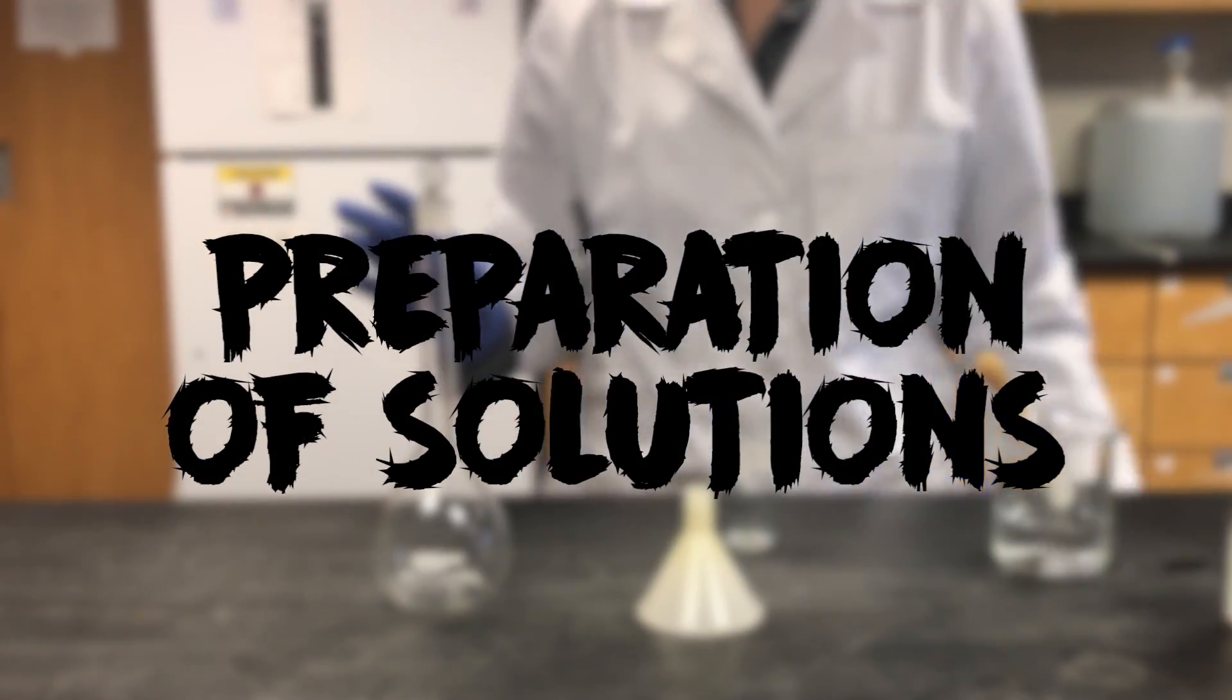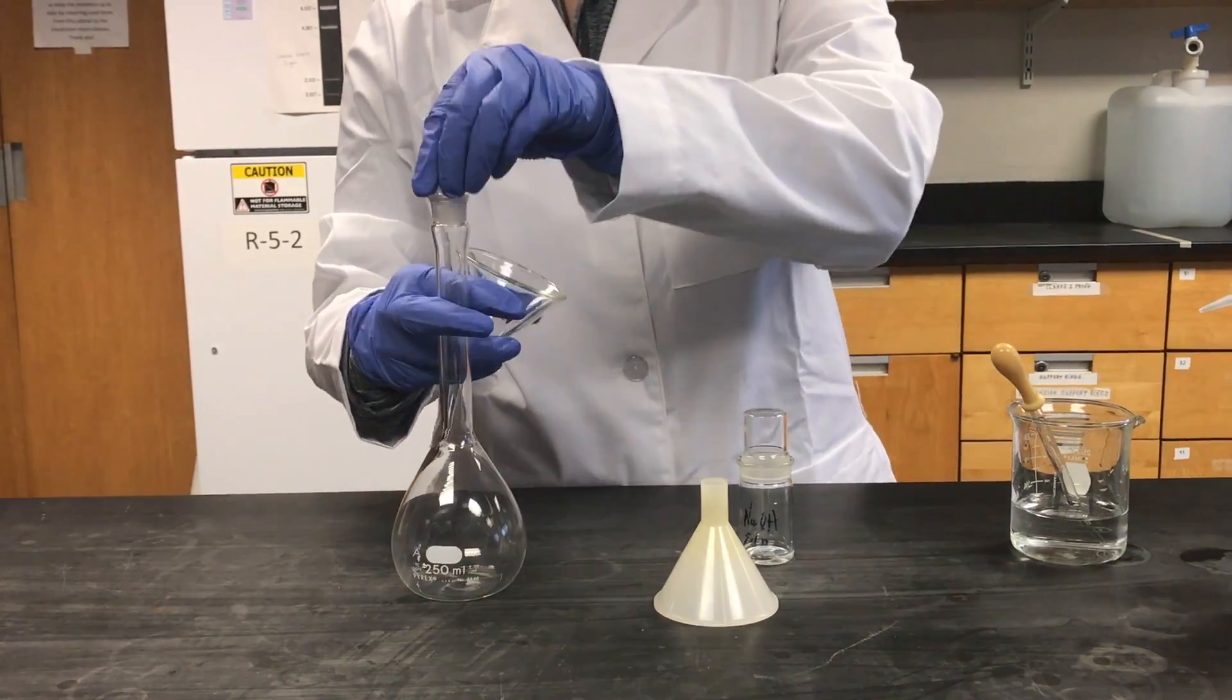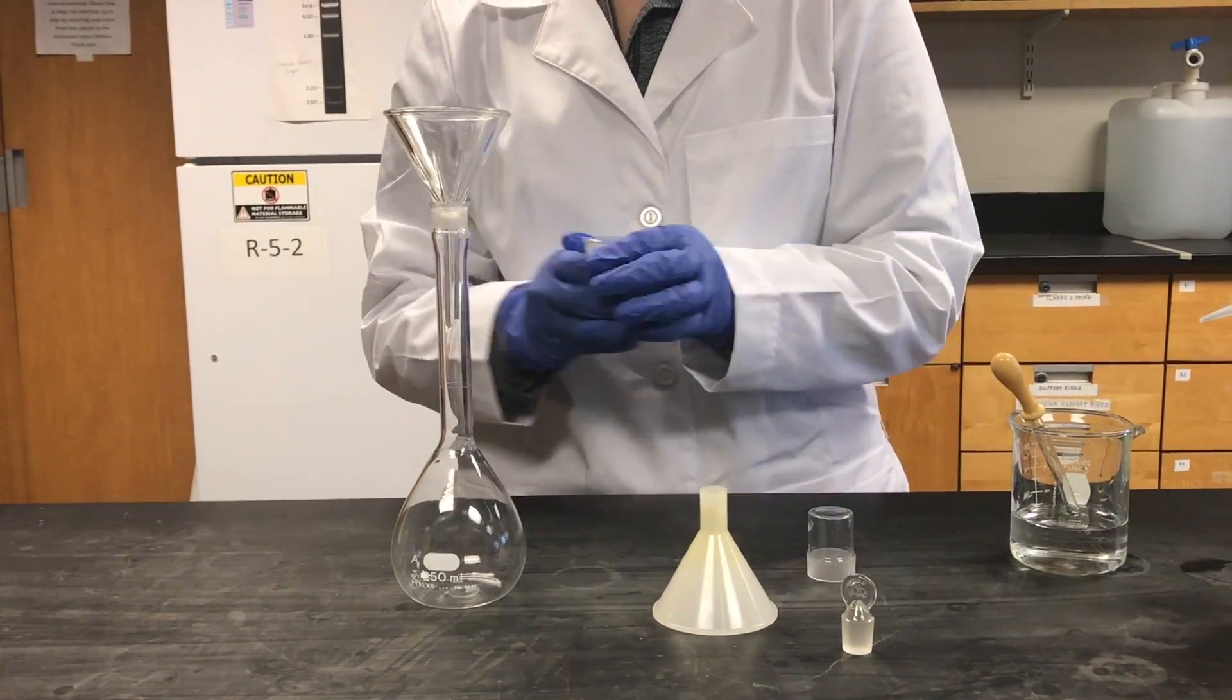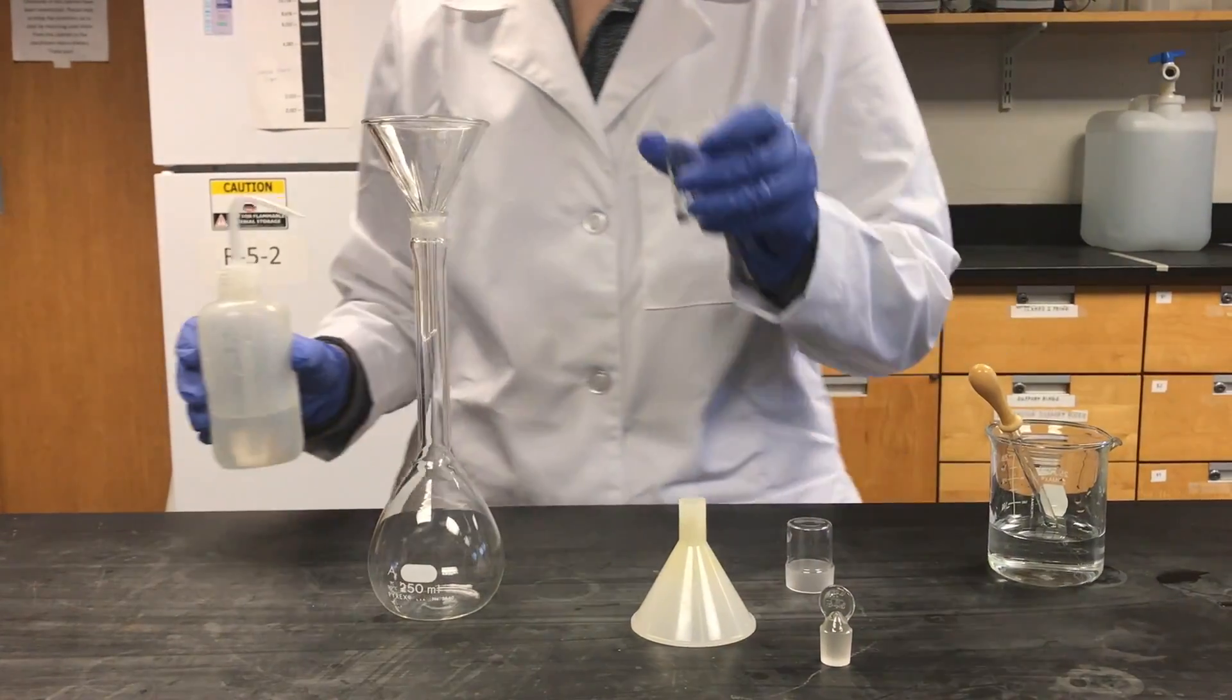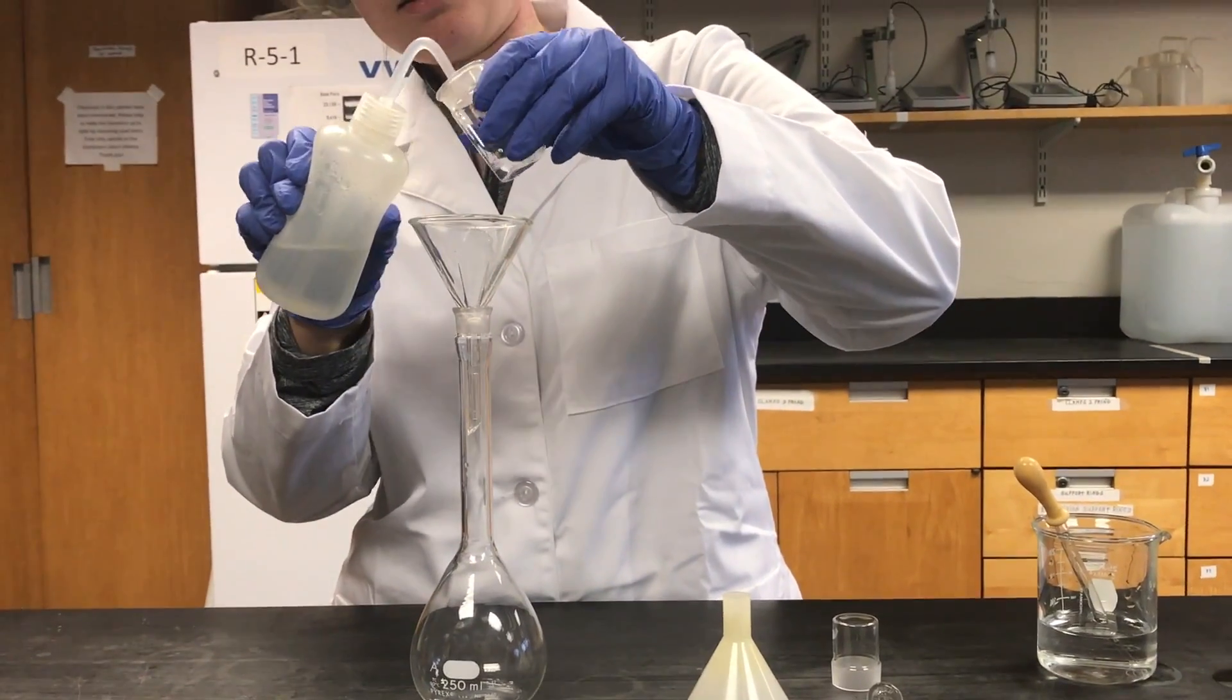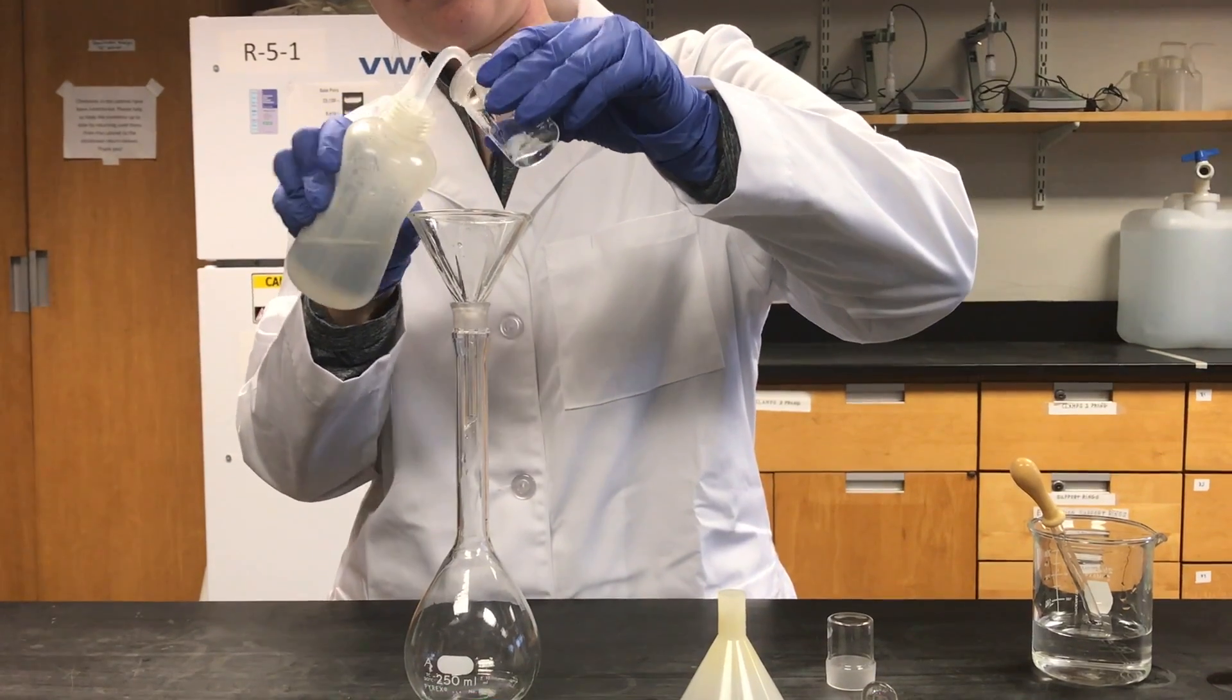Next, we're going to teach you how to prepare solutions accurately. For the transfer of liquid solution, you must place the glass funnel inside the volumetric flask and pour in your sample. And make sure to rinse out the weigh bottle with DI water to ensure all of the transfer.